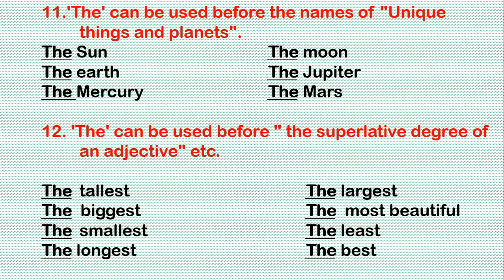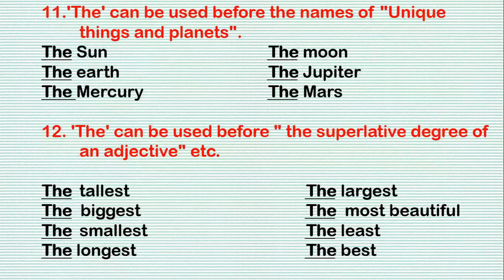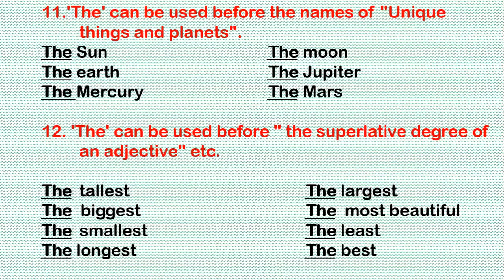Rule 12: 'The' can be used before the superlative degree of an adjective. For example: the tallest, the biggest, the smallest, the longest, the largest, the most beautiful, the least, the best, etc.